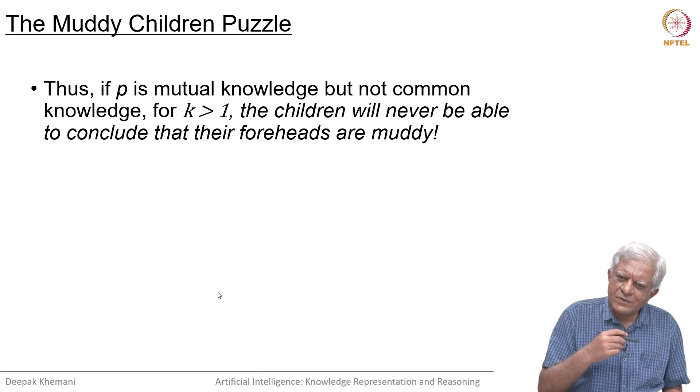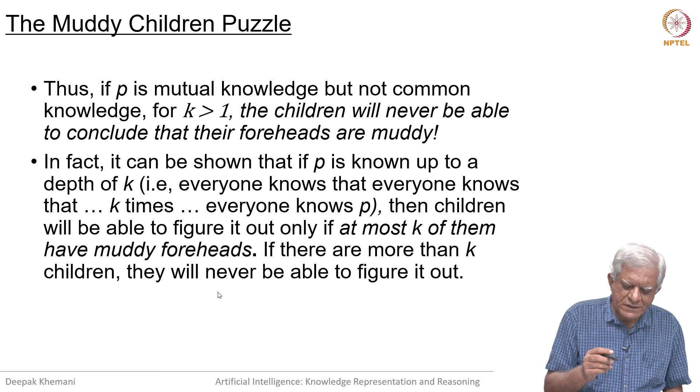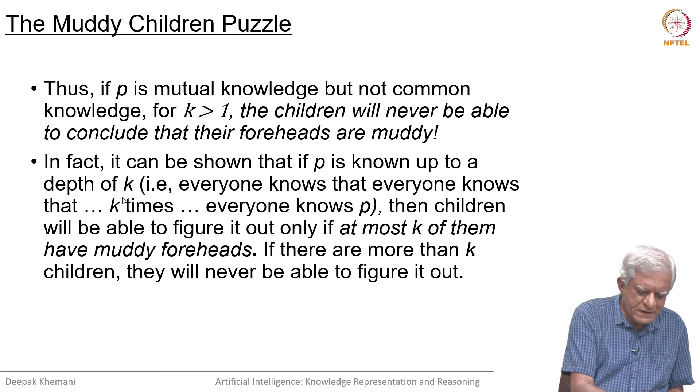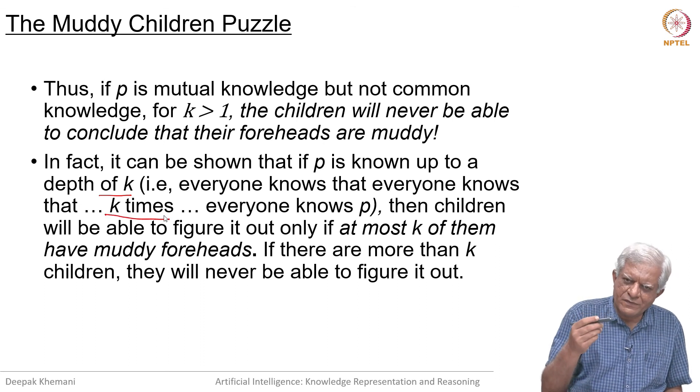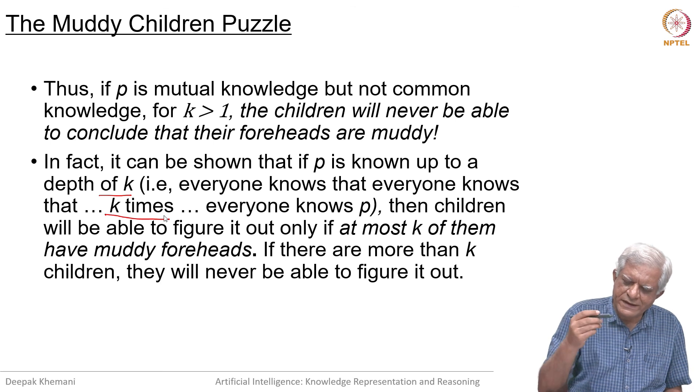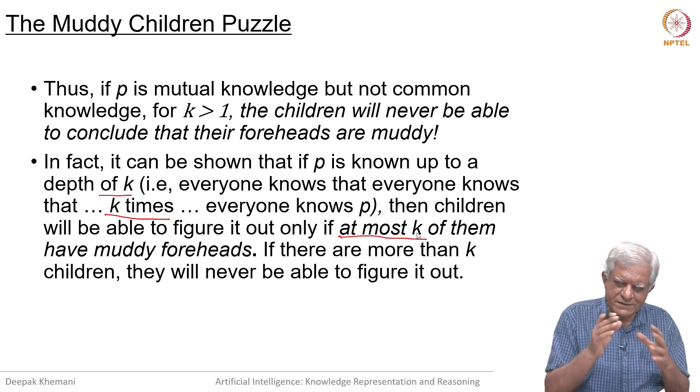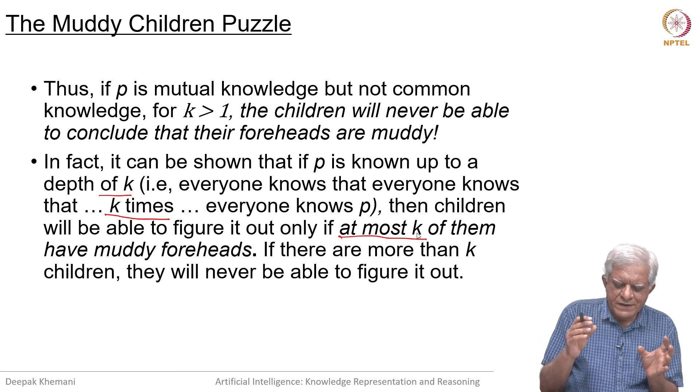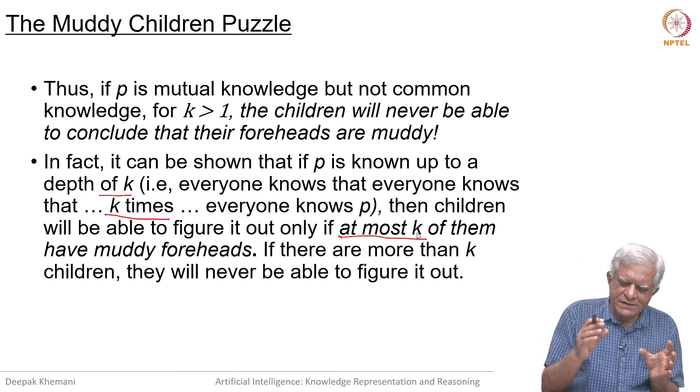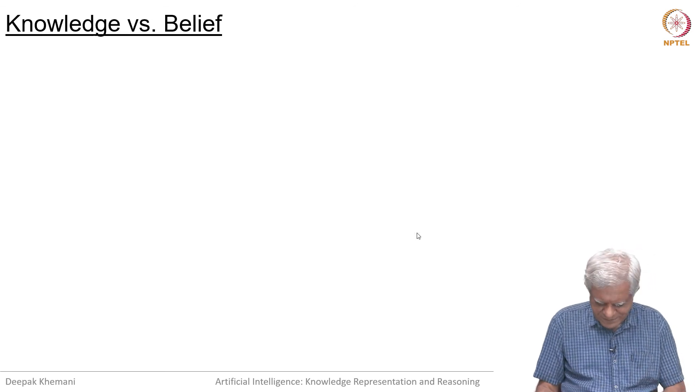But common knowledge said that up to any arbitrary level of nesting - in general it can be shown that if the depth is k, that the depth of this shared knowledge K_i knows that K_j knows and so on - if the depth of this length of this expression is at least k, then if there are only k children, then that much mutual knowledge is enough. You should think about that a little bit.